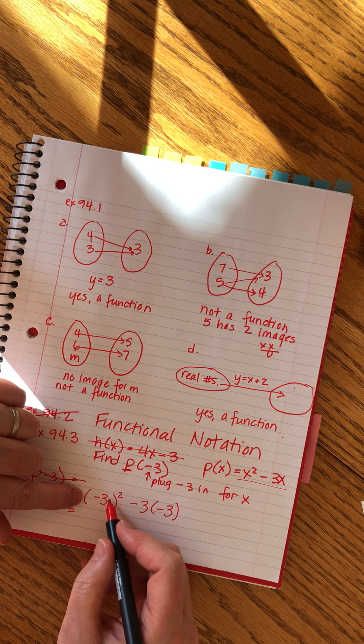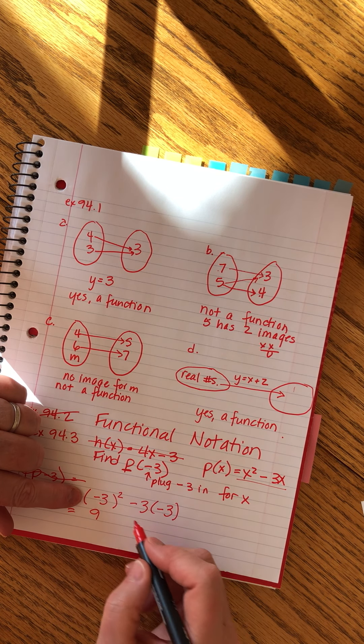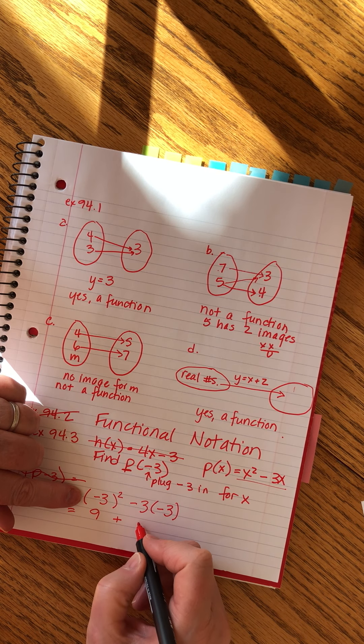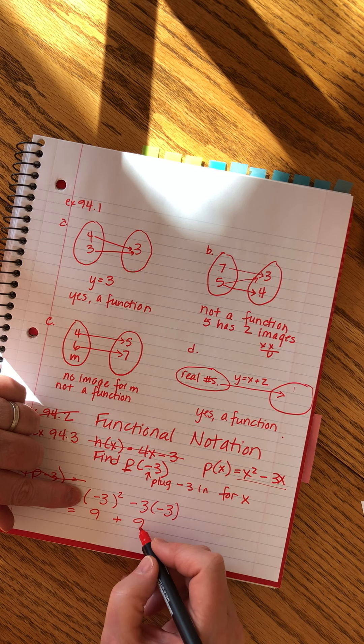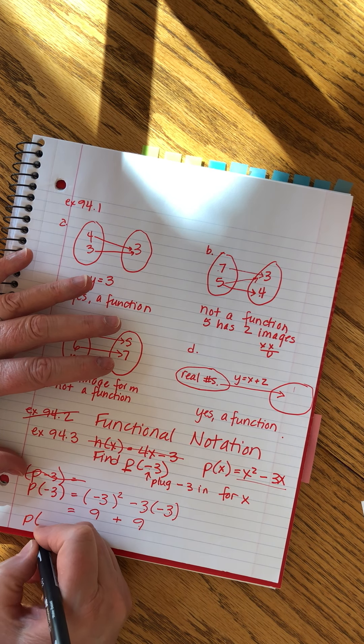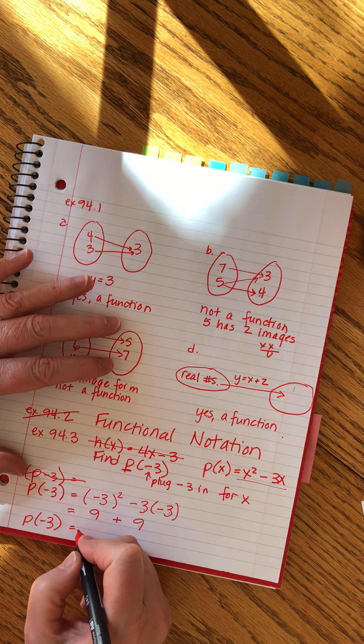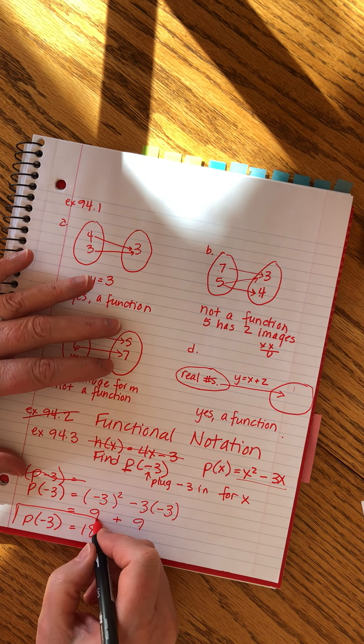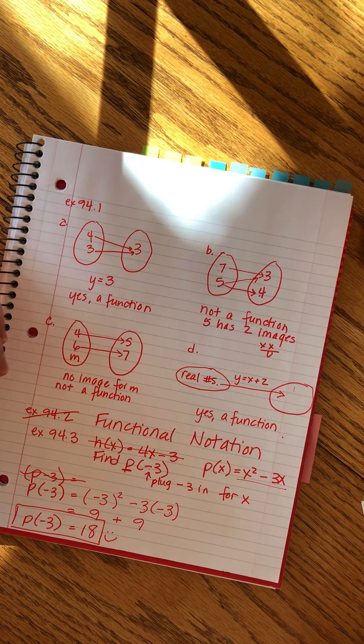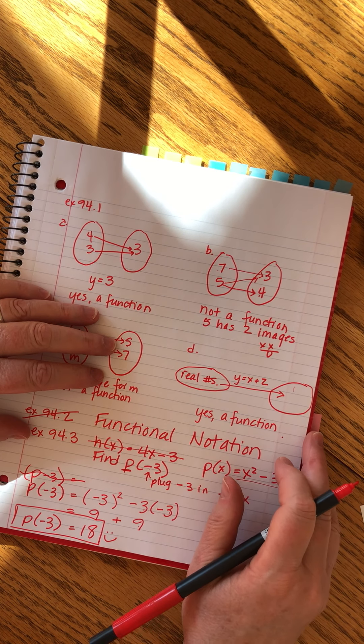Minus three quantity squared is positive nine because I cannot cover that up. So it turns positive. This, however, becomes also positive nine. Three times three is nine, and then two minuses make a plus. And so we find that the P of minus three equals 18. Tell me that wasn't super easy. That's super easy. It's just figuring out what this P business means.